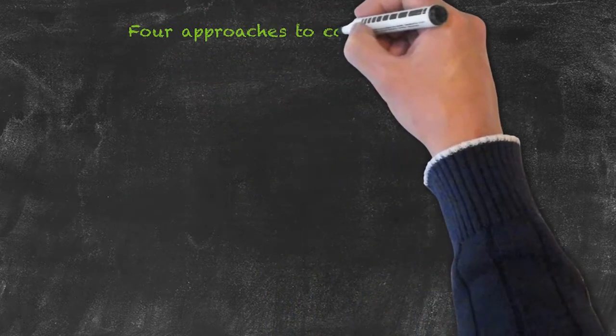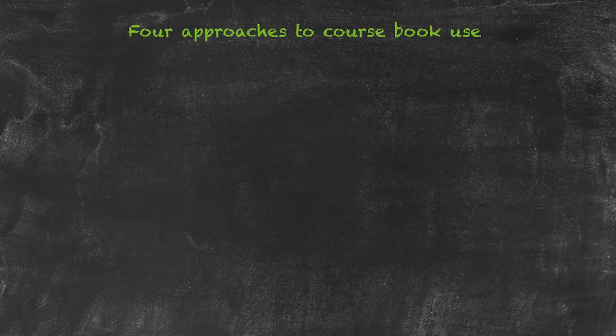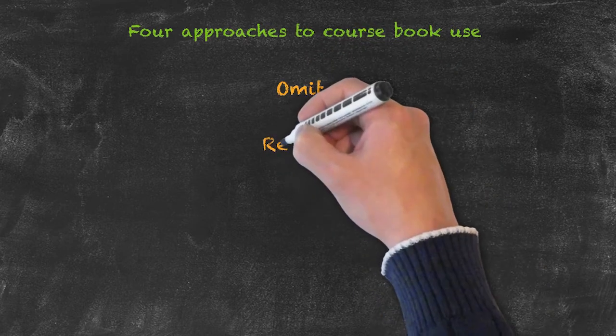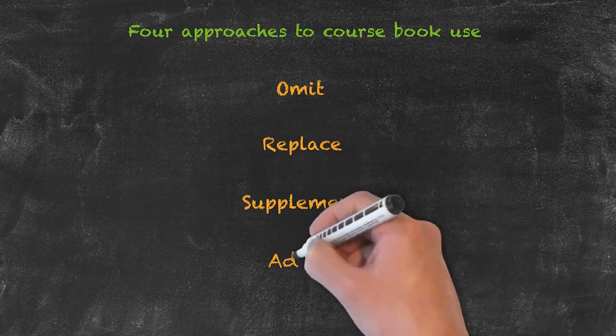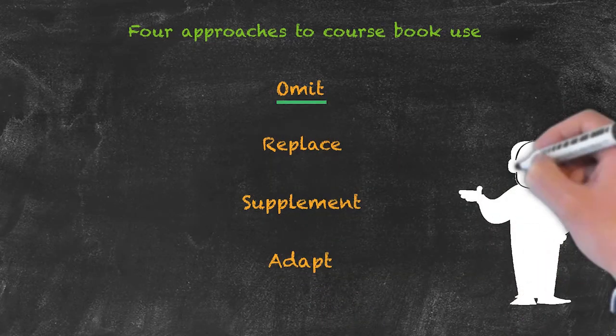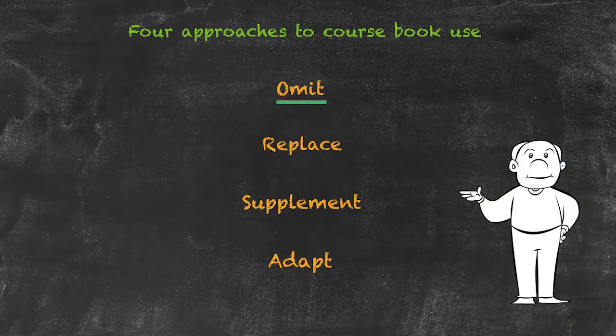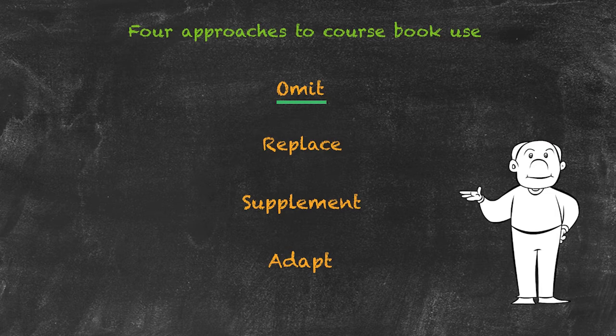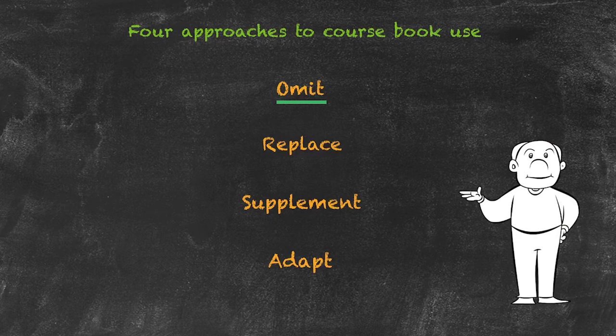So, four different possible approaches to using the course books may be to omit, to replace, to supplement or to adapt. With omit, basically what we mean is that we leave out selected parts of the material presented in the book, either a single part of a lesson or indeed a whole lesson or maybe even two or three lessons in a row. So we omit certain parts of the book.